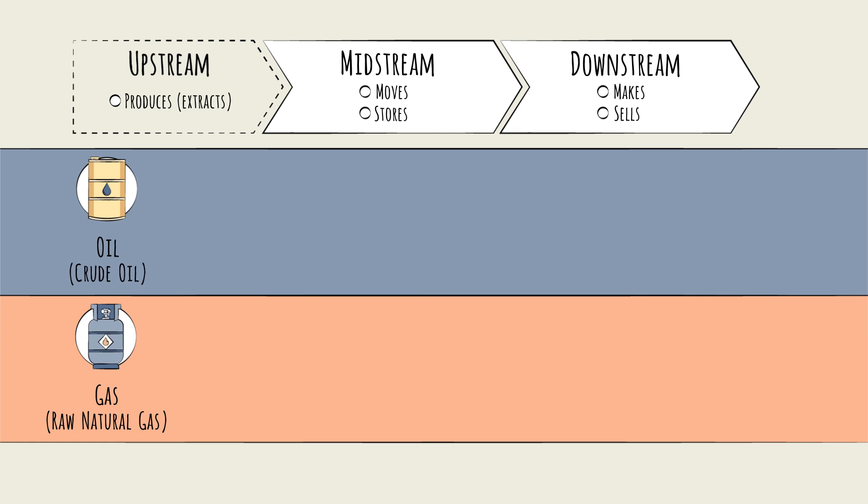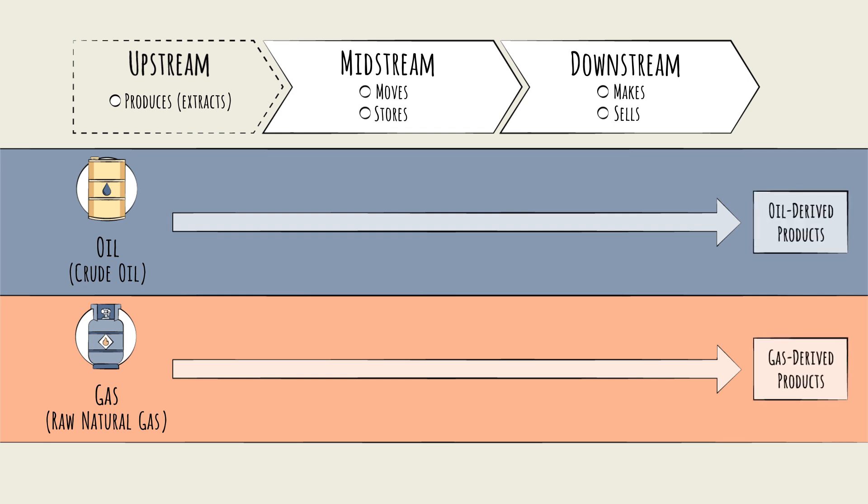Crude oil and raw natural gas then follow separate, though largely parallel, paths through the mid and downstream, ultimately reaching the market in the form of any number of oil-derived or gas-derived end products.